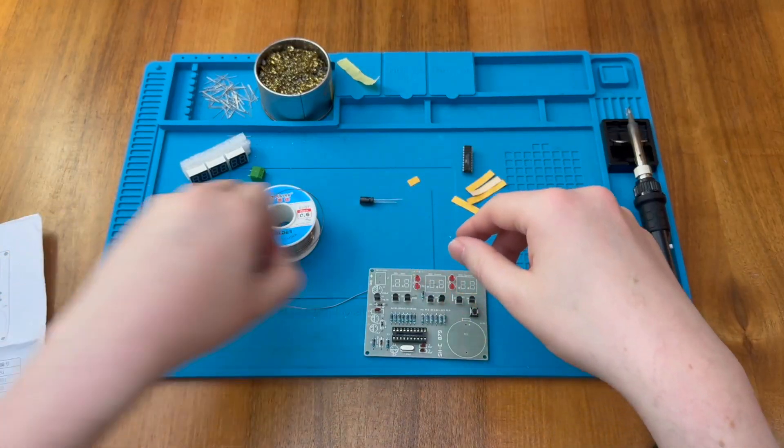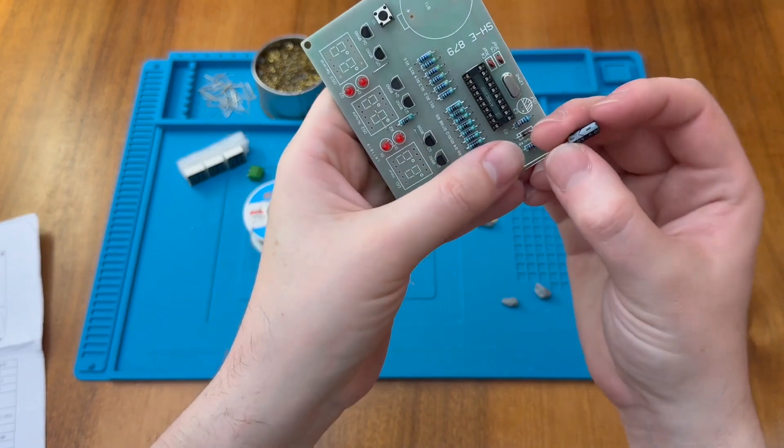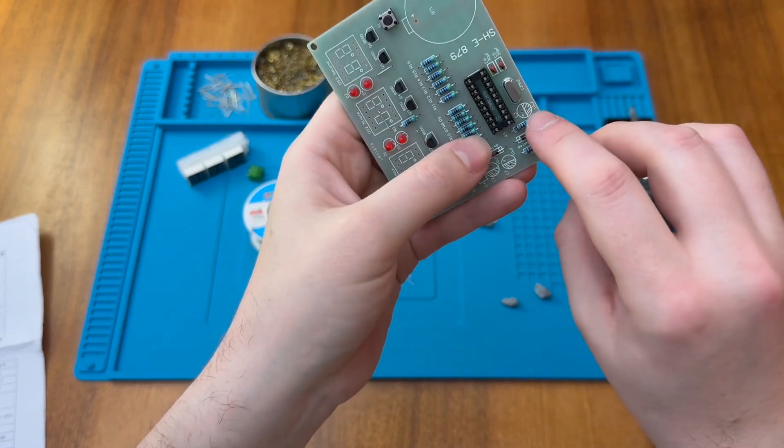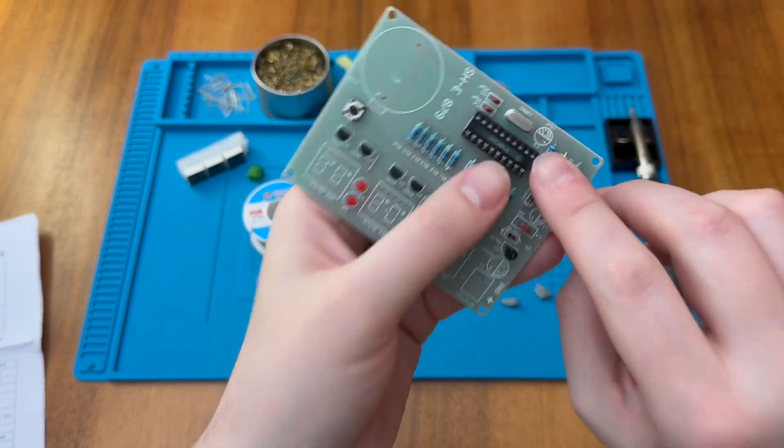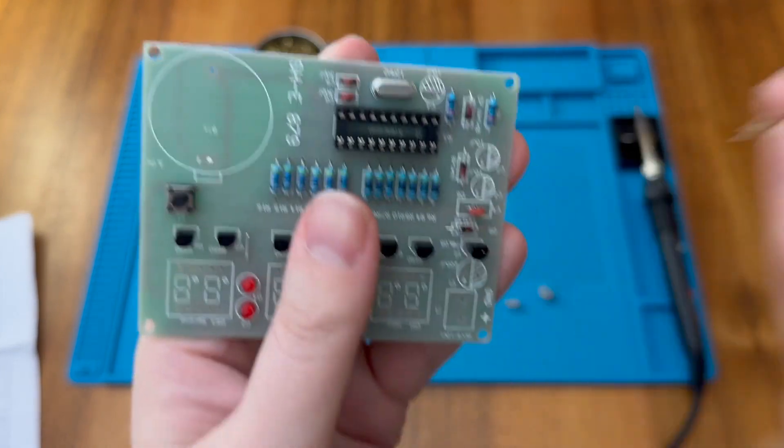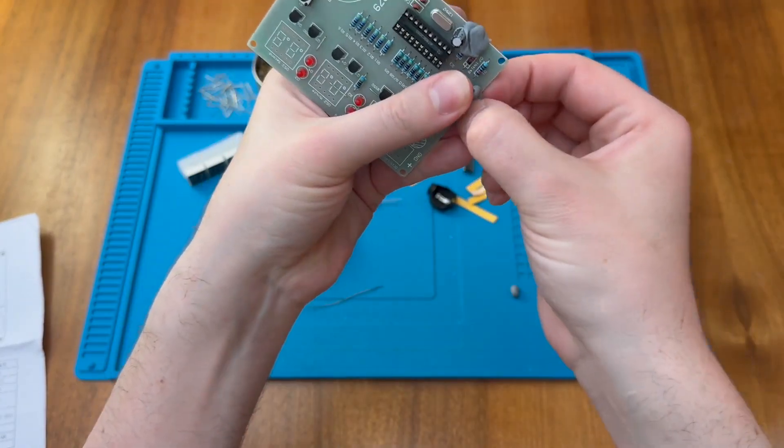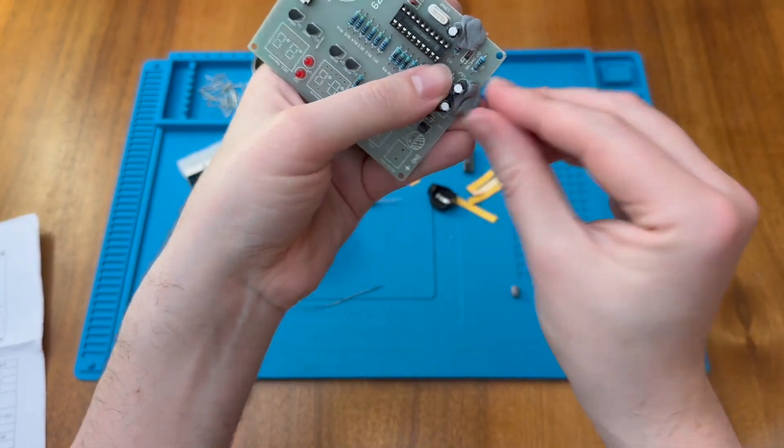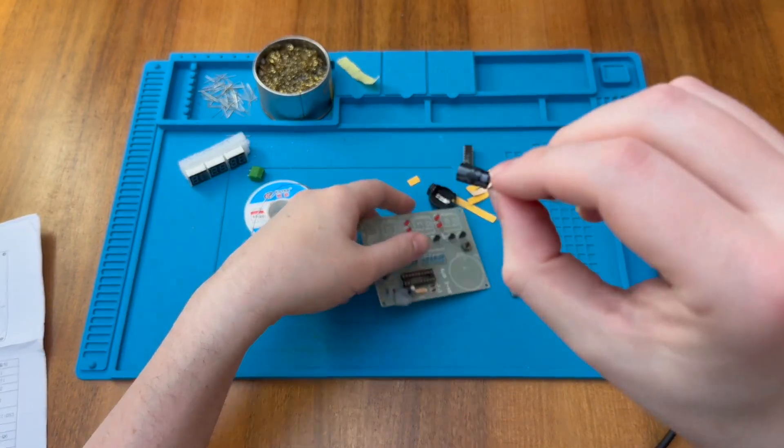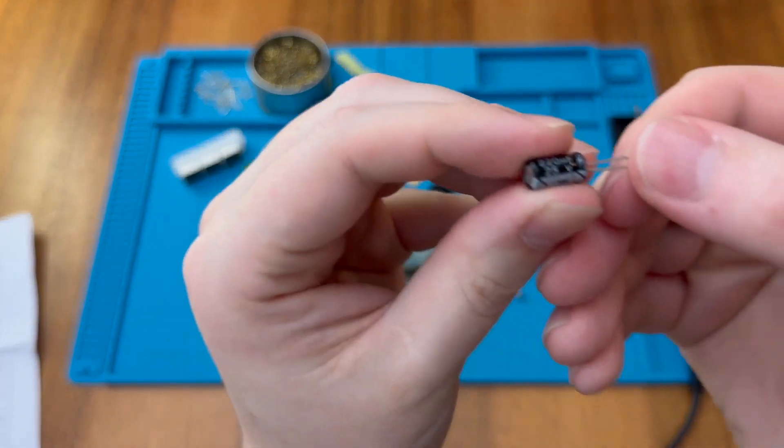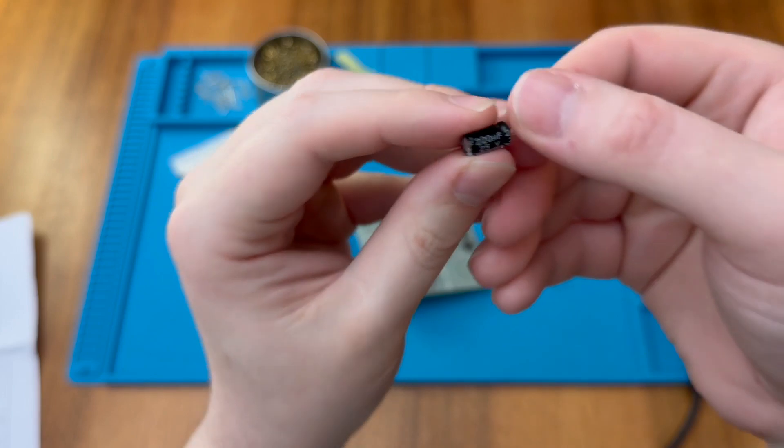Let's put the capacitors in next. So capacitors are marked with the negative sign. The negative is the hashed area, and there's a tiny little plus sign on the board as well. Again, longer lead is positive. These are all at 10 microfarad. And then this one should be a 220 microfarad. And that's actually quite clear. That's a nice big capacitor.